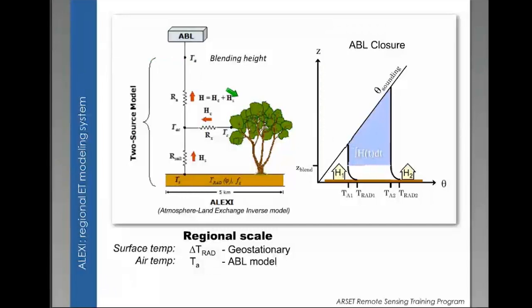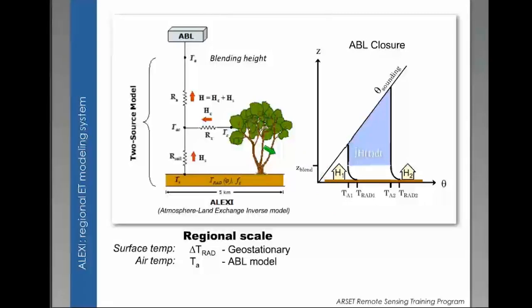In ALEXI, we have this boundary layer closure to help with the two-source model, so we can internally diagnose the temperature of the blending height and have consistency between what we see from satellite and what is occurring at that blending height. This occurs by taking an early morning sounding of potential temperature, then measuring the change in land surface temperature in the mid-morning, and calculating how much sensible heat flux is needed to raise the boundary layer height. These two components iterate until convergence, producing the surface energy fluxes used to calculate evapotranspiration.